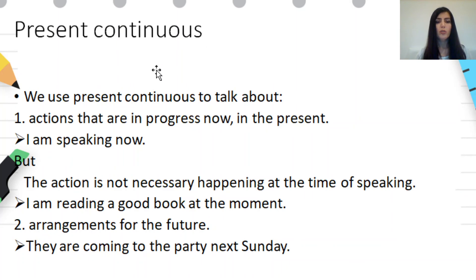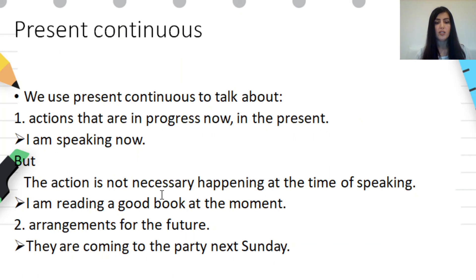When do we use present continuous? We use present continuous to talk about actions that are in progress now, in the present. For example: 'I am speaking now.' But the action is not necessarily happening at the exact time of speaking. For example: 'I am reading a good book at the moment' — meaning I have started to read the book and I haven't finished it yet. Present continuous is also used to talk about arrangements for the future. For example: 'They are coming to the party next Sunday.'